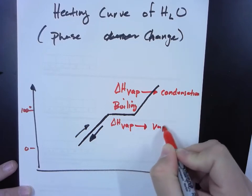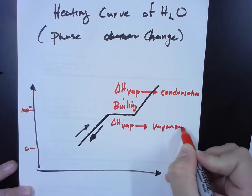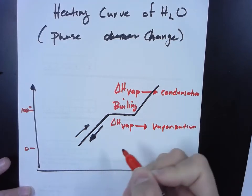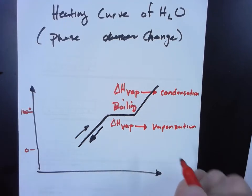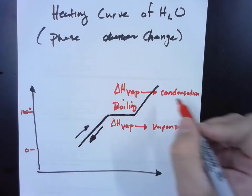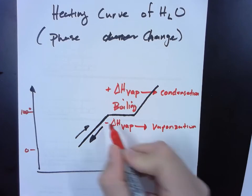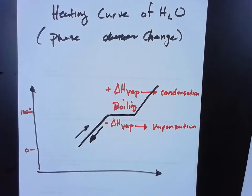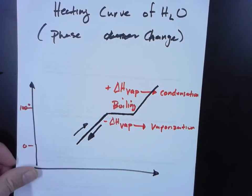So one of them is a negative and one of them is a positive. Can you figure out which one it is? Well, if we're adding energy, then that's going to be a positive, right? That's positive. And this one's going to be negative. But we're going to get to that in just a minute.